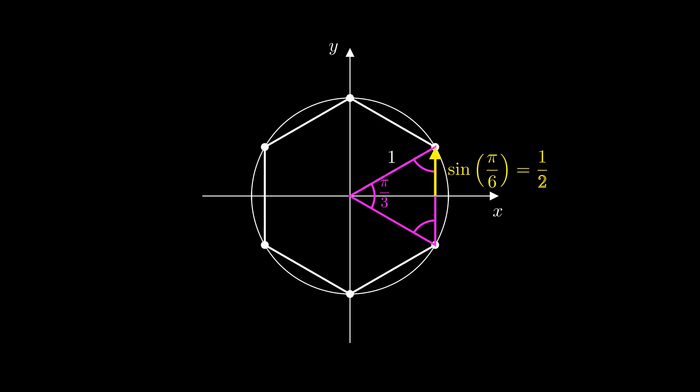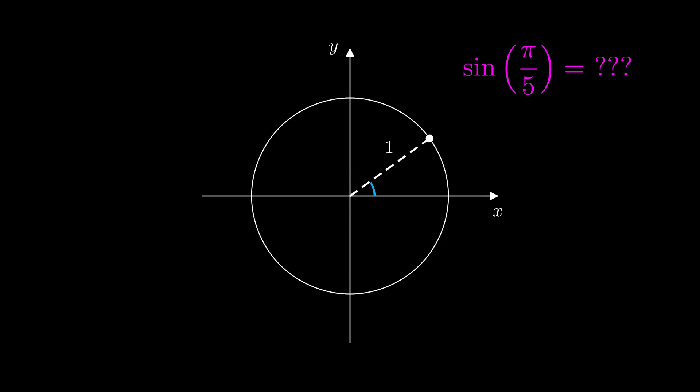If you're okay with that, now let's do a similar thing for the sine of π/5. We can represent it on the unit circle, and because it's one-fifth the way around to π, we can inscribe this regular pentagon, and the sine of π/5 turns out to be this length here.